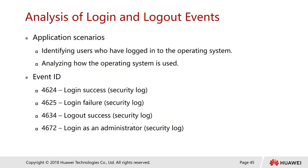This is the analysis of login and logout events. The application scenario is to identify users who have logged into the operating system, especially on a server where multiple users log in and out, and to analyze how the OS is being used. Key event IDs include: 4624 for successful login, 4625 for failed login attempts, 4634 for successful logout, and 4672 for login as administrator — all found under security logs.